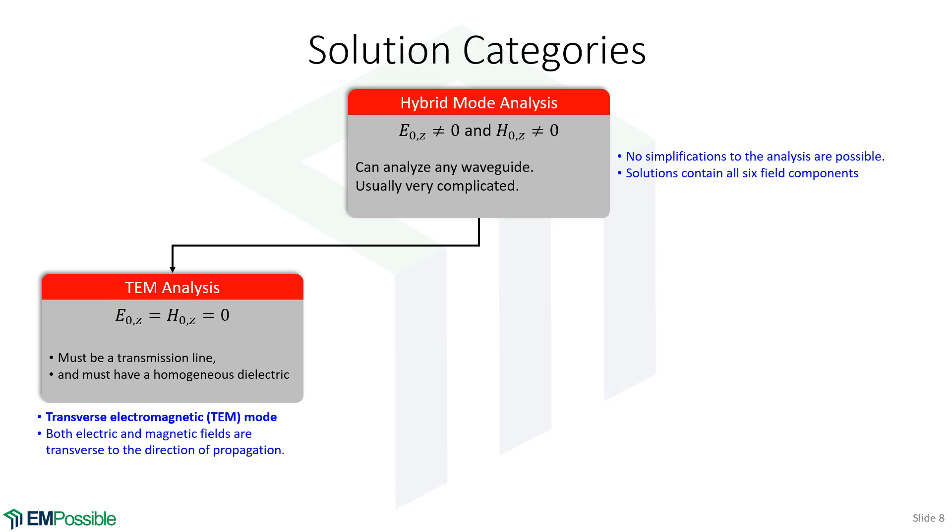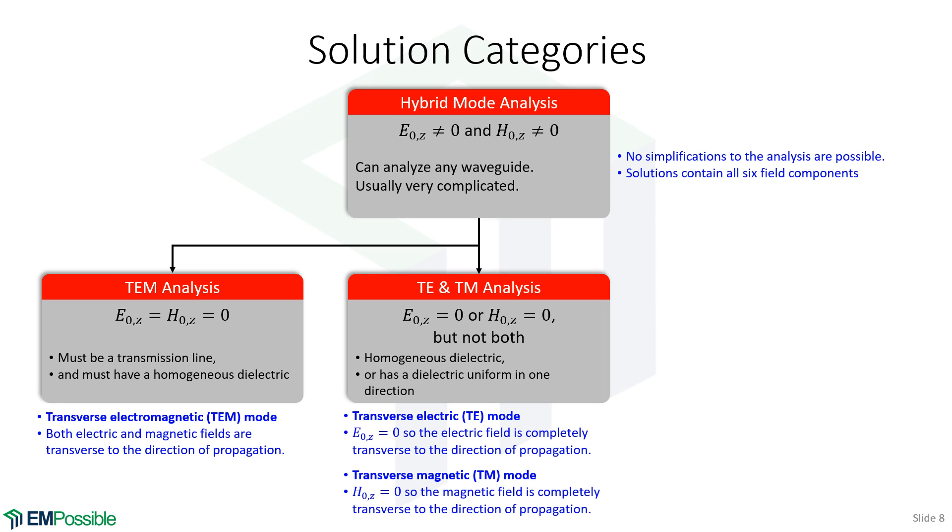Now, if we have a waveguide that's not a transmission line, and it has a homogeneous fill, E0Z and H0Z are independent equations. That means there will be a solution for H0Z when E0Z is zero. And likewise, there'll be a solution for E0Z when H0Z is zero. And that's the origin of the TE and the TM modes.